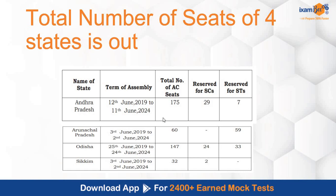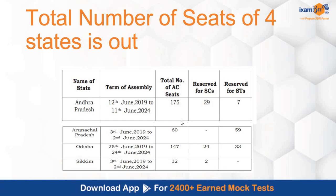The schedule that has been released covers four states' assembly constituencies. As you can see here, the term of assemblies and the number of seats are listed. The term of the Andhra Pradesh state assembly is 12th June 2019 to 11th June 2024, with 175 seats. Similarly for Arunachal Pradesh, you can see the term and the seats. For Orissa, the assembly term ends on 24th June, and there are 147 seats. For Sikkim, the term ends on 2nd June, and there are 32 seats.